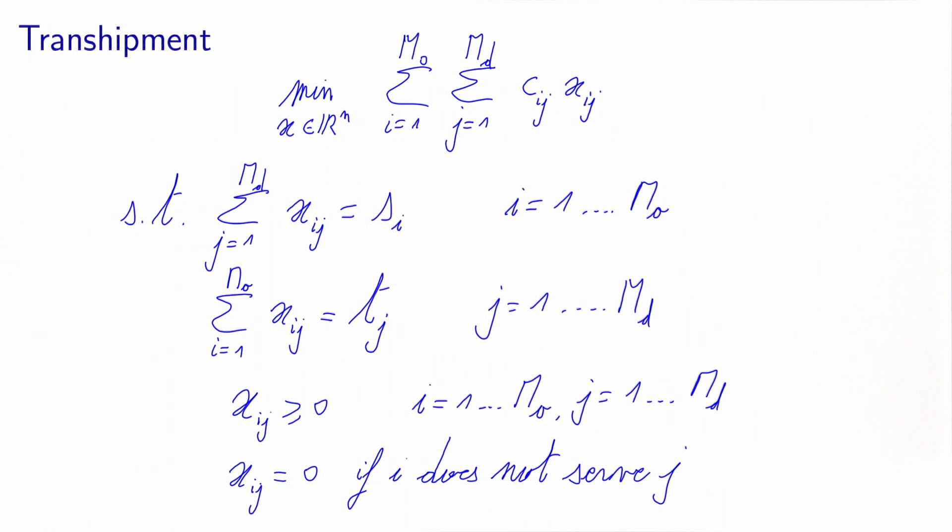So this is the transshipment problem written when the application is a transportation problem. The transportation problem does not have an underlying network structure.